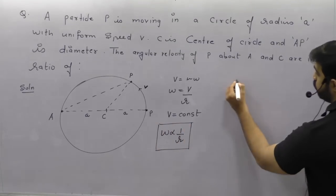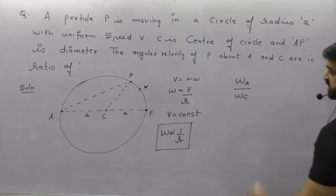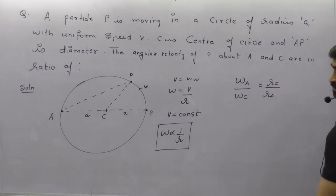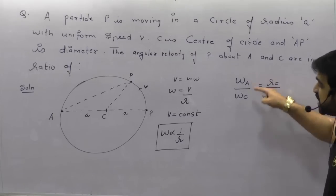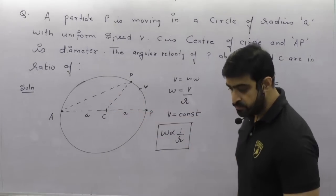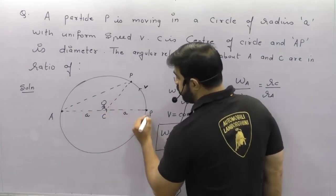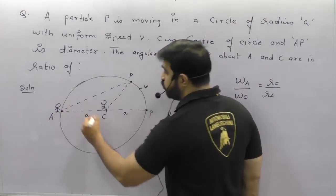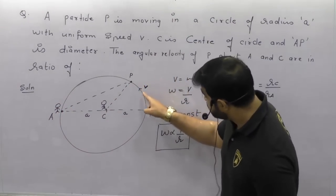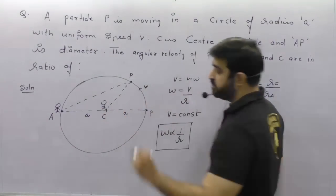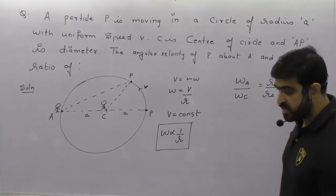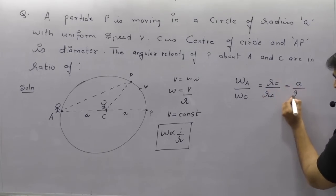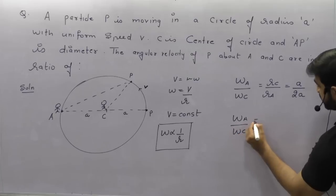You can use the relationship: omega_A / omega_C = radius about C / radius about A. Omega will change with respect to the point of observation. If you are standing at C and observing the circle, your radius will be A. But if you are standing at A and observing this point, your radius is going to become 2A. So R_C is A and R_A is 2A, so omega_A / omega_C = 1/2.